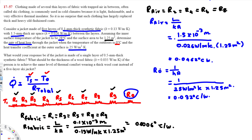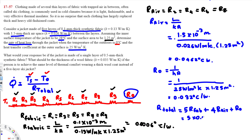Since all resistances are in series, we can add them directly. R_total = 5×R_fabric + 4×R_air + R_conv = 5×(0.0006) + 4×(0.0462) + 0.032 = 0.003 + 0.1848 + 0.032 = 0.2198°C/W.